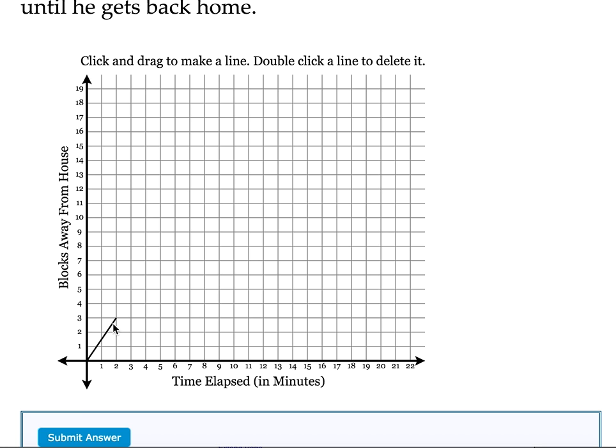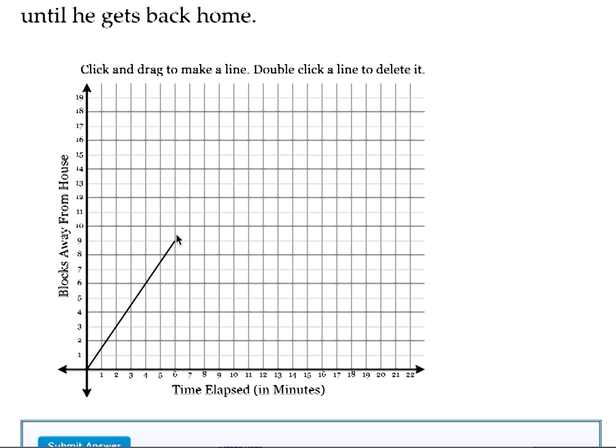So every 2 minutes he's going to go 3 blocks. Then in 2 minutes we're going to go 3 blocks. So every 2 minutes here, 2 boxes this way, he's going 3 blocks. Then 2 boxes to the right, which is 2 minutes, and up 3 blocks. 2 boxes to the right and up 3 blocks.